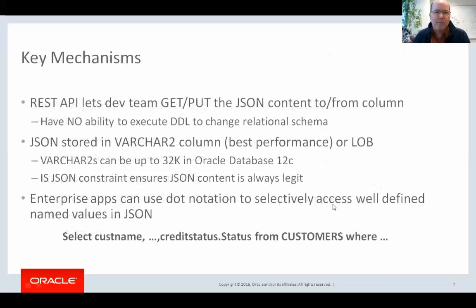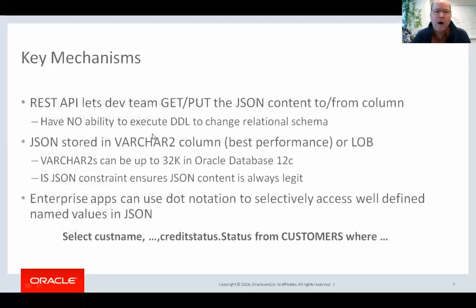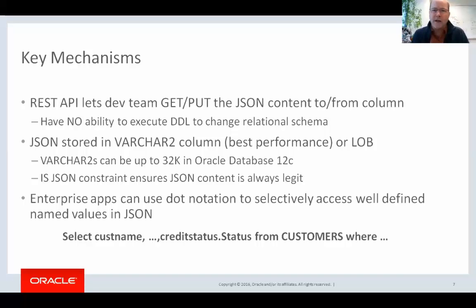This can be set up using REST — you would create a REST API that allows the development team to get and put this JSON content to and from this column, with no ability to execute SQL DDL to change the relational schema. JSON can be stored in Oracle Database 12c in a VARCHAR column, which is a good performant way of storing it, or in a BLOB if you have a large JSON document. A nice thing in 12c is that VARCHAR length was increased to 32K, which is a pretty sizeable amount of data, and for many of these applications — just a component of an overall application — 32K may be all you need.